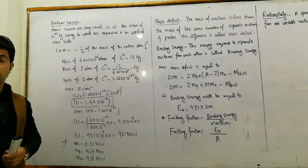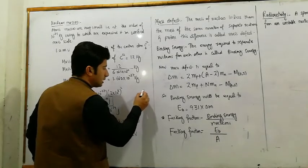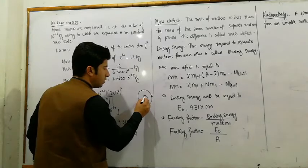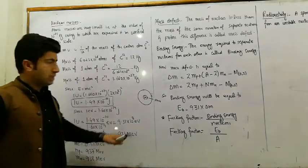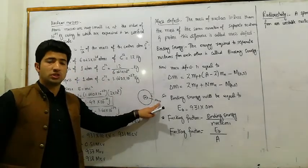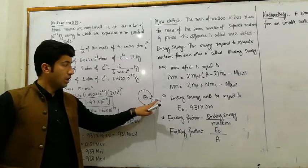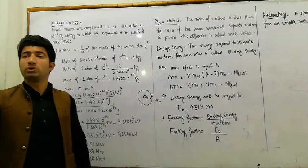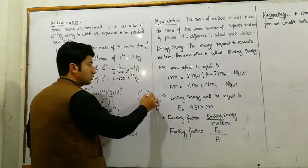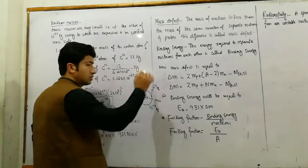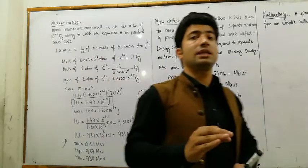The electron mass is much smaller than the nucleons. Inside the nucleus, we have protons and neutrons. The mass of protons and neutrons is also at the order of 10 to the power minus 27 kg, whereas the electron mass is at the order of 10 to the power minus 31 kg. So proton and neutron mass is much greater than electron mass.